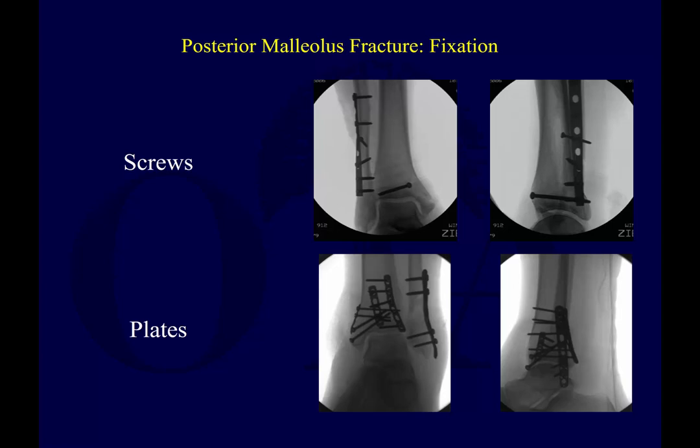Here are some different options to fix the posterior malleolus. It can be fixed with screws — you can go posterior to anterior or anterior to posterior, depending on the size of the fragment. You can also use plates posteriorly, which are helpful for larger fragments and posterior shearing type injuries.